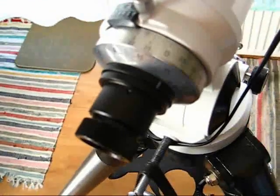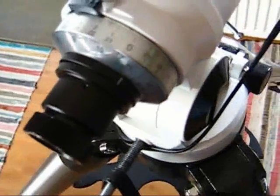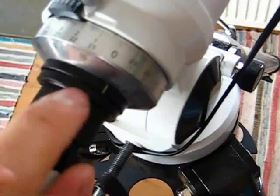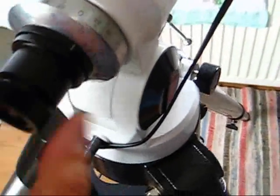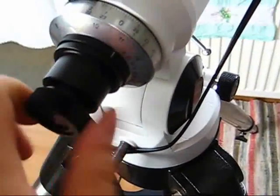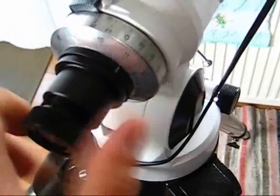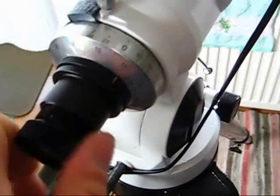So, how to do this? You can see on the housing of the Polar Finder Scope, that little screw, there are three screws, which are holding the reticule in place.